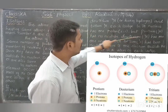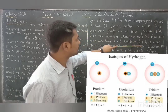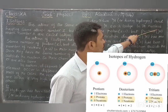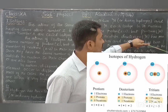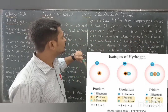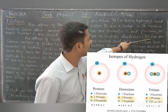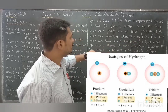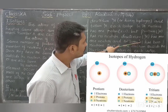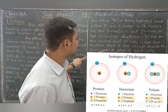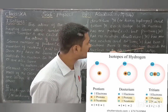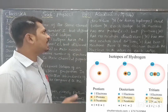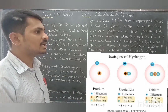Protium H-1-1 has no neutron, because it has one proton and the mass number is the sum of protons and neutrons — one proton, so neutrons is zero. Deuterium H-1-2 has one neutron and one proton. And tritium H-1-3 has two neutrons.